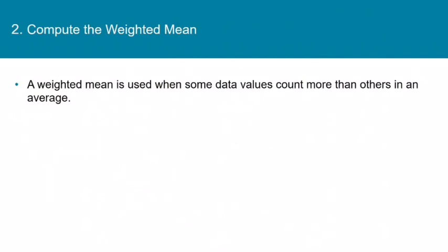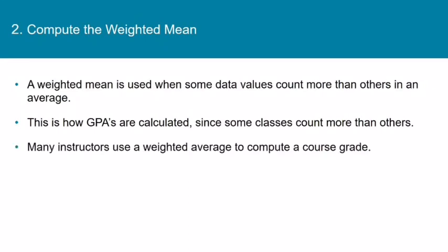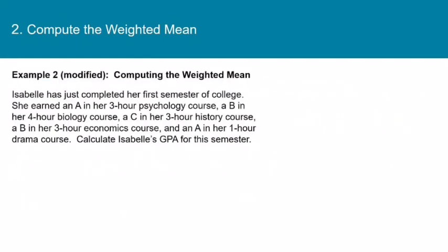Now let's talk about weighted means. A weighted mean is used when some data values need to count more than others in an average. This is how GPAs are calculated, since some classes count more than others, and many instructors use a weighted average to compute a course grade. The formula for the weighted mean works exactly like the formula for the mean of a frequency table, so we can use the same one-variable stats command on the calculator.